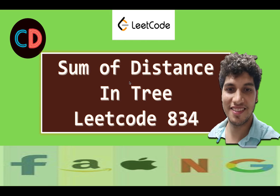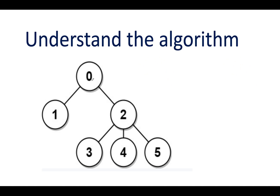Sum of Distances in a Tree — LeetCode 834. This is a hard question on LeetCode and I also feel the same. We are given an undirected connected tree with n nodes labeled from zero to n minus one and there are n minus one edges. Let's try to understand the question using the provided example. There are in total six nodes or indexes in this tree.